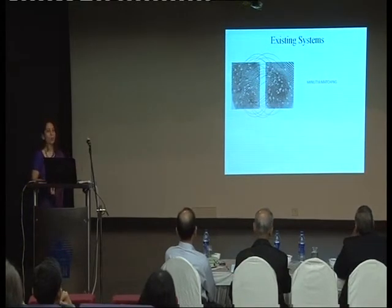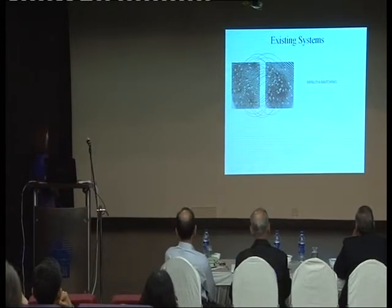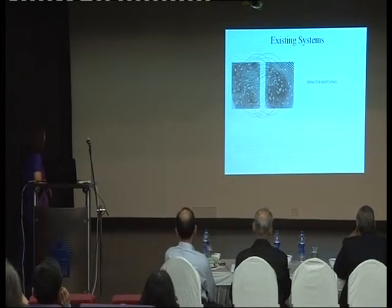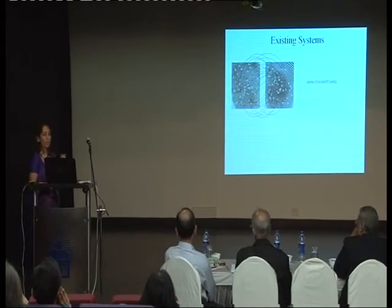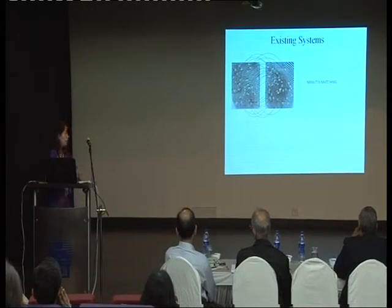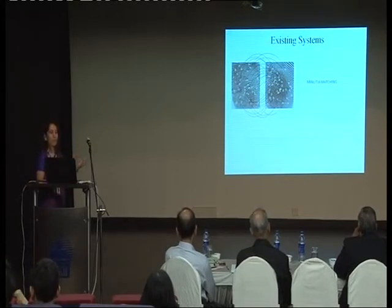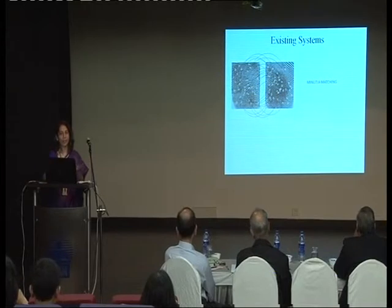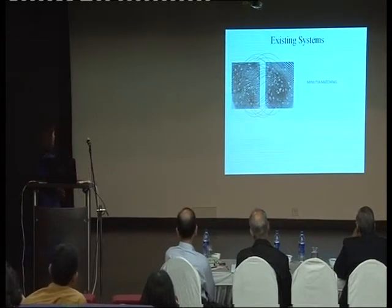Before I move on to my own system, let me describe how the existing system has been built. You have a fingerprint with certain unique characteristics in terms of minutiae. Generally, fingerprint experts in forensics try to match fingerprints by checking the positions and types of minutiae. That is how it has been done manually. When people try to automate the system, they try to do the same thing, and it becomes very complicated to extract these features in an automated system.